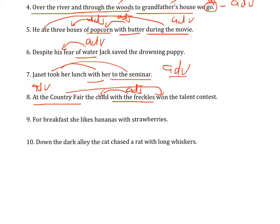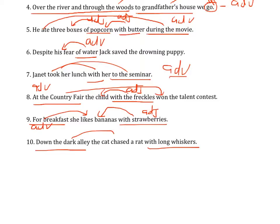For breakfast, she likes bananas with strawberries. 'For breakfast' modifies 'likes' — adverb. 'With strawberries' modifies 'bananas' — adjective. Down the dark alley, the cat chased the rat with long whiskers. 'Down the dark alley' is where it chased — adverb. 'With long whiskers' modifies 'rat' — adjective.